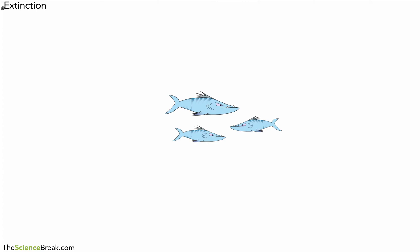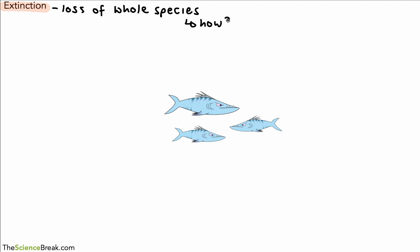Hello and welcome. Today we're looking at this idea of extinction. Extinction means the loss of whole species — when all the individuals of a species have died. This can happen for a various bunch of reasons. So what we're going to look at today is how this possibly could happen to a particular species.